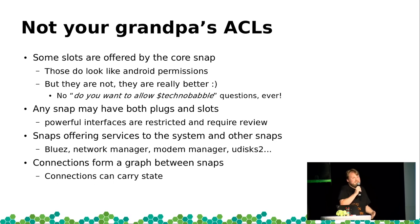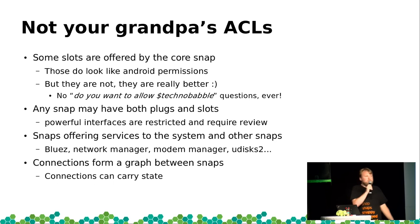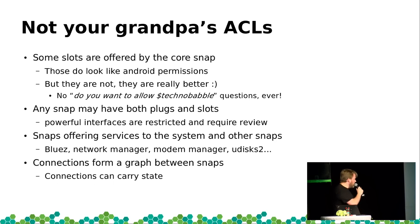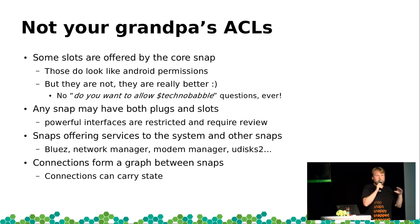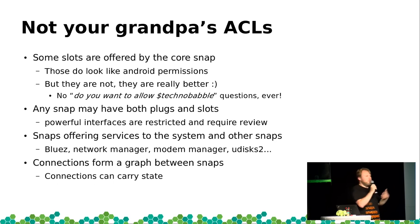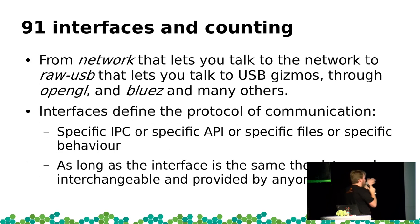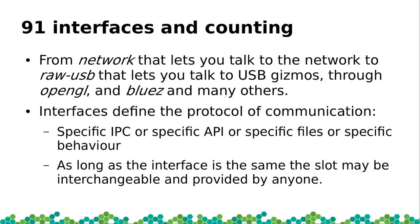Docker developers get the Docker interface but no one else can claim it without a conversation with us. On a local developer system they can shoehorn it in, but they won't be able to socially engineer anyone into believing they have superpowers. Snaps can also offer services to the system — we've built an entire distribution out of just snaps where everything including system services is a snap, equally confined. We have 91 interfaces today covering all kinds of applications from desktop to embedded to cloud.